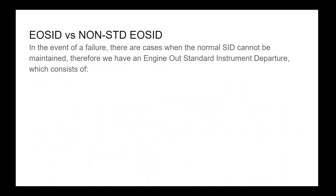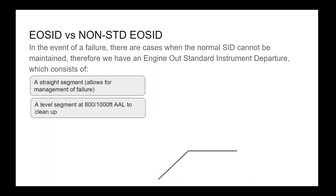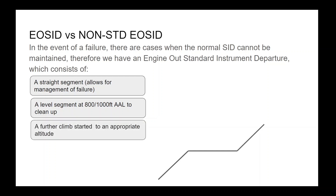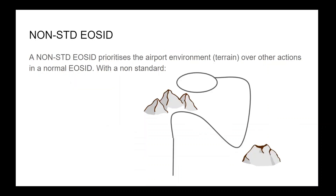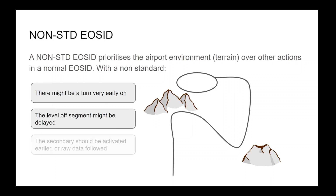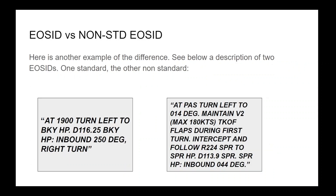In the event of a failure, there are cases when the normal SID cannot be maintained. Therefore we have an engine out standard instrument departure, which consists of: a straight segment allowing for management of the failure; a level segment at 800 to 1000 feet above aerodrome elevation to clean up, depending on company operating procedures; a further climb to an appropriate altitude; followed by a turn to a waypoint or nav aid and holding at that point. A non-standard engine out SID prioritizes the airport environment and terrain. It may involve a very early turn, a delayed level-off, earlier secondary activation, raw data flying, and more turns.